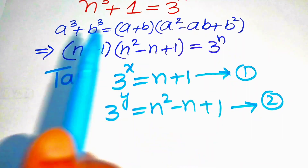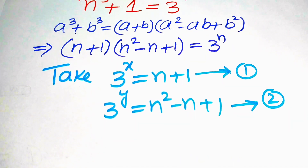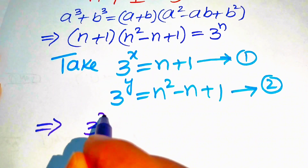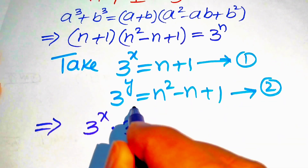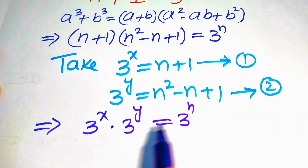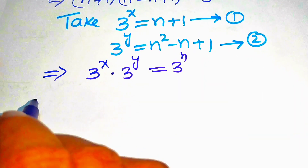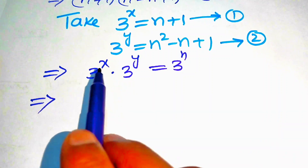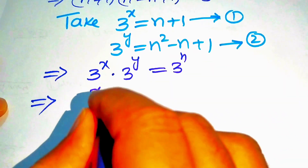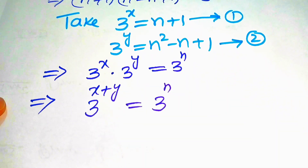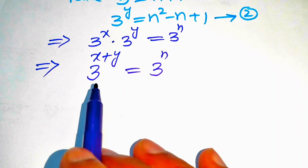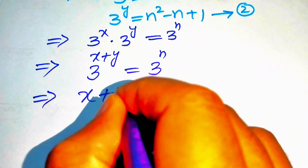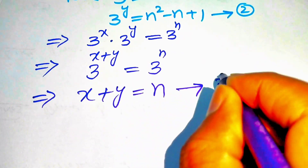Substituting both values into the equation, we get 3 to the power of x times 3 to the power of y equals 3 to the power of n. Using the exponential law, since the bases are the same, we add the exponents: 3 to the power of x plus y equals 3 to the power of n. Equating exponents gives x plus y equals n — call this equation 3.